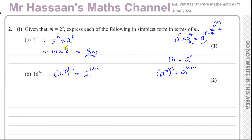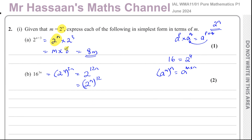But what I want is 2 to the power of n. So I can modify this: 2 to the power of 12n is the same as 2 to the power of n to the power of 12. Since 2 to the power of n equals m, I can replace it, giving m to the power of 12. And there we have the answer to question 2, parts A and B.